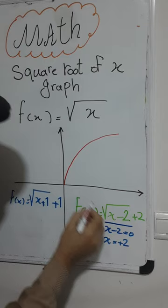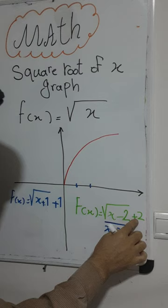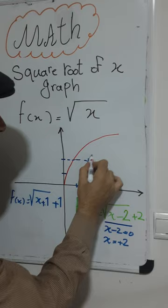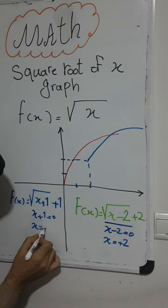...equals to zero, so x equals positive two. And I write here one, two, three. I come right, okay. And what about two? I go up and again I have here, so this is the new graph.